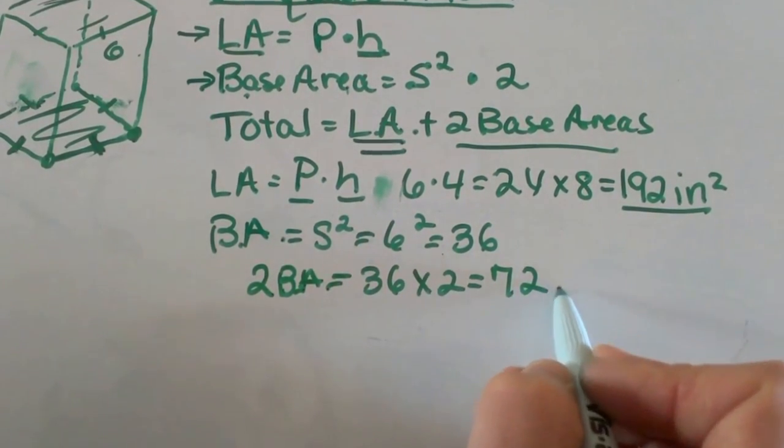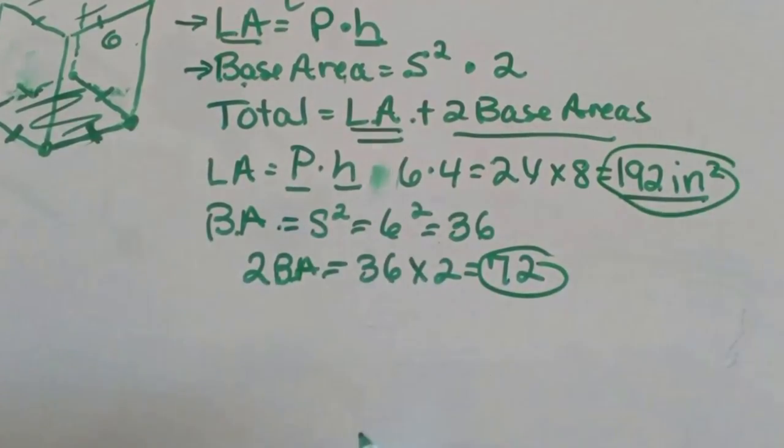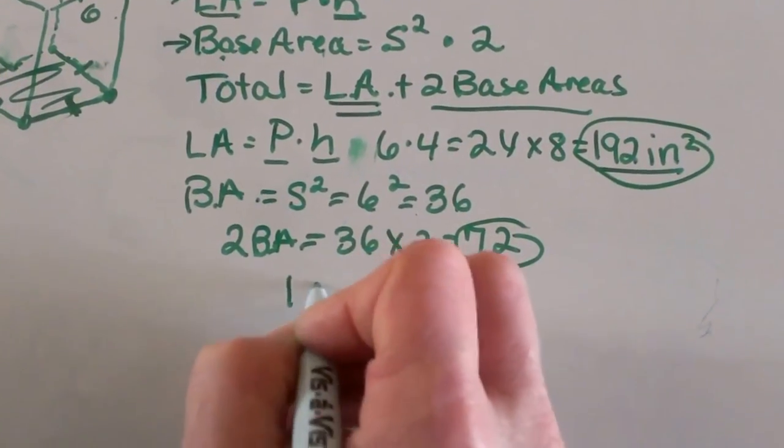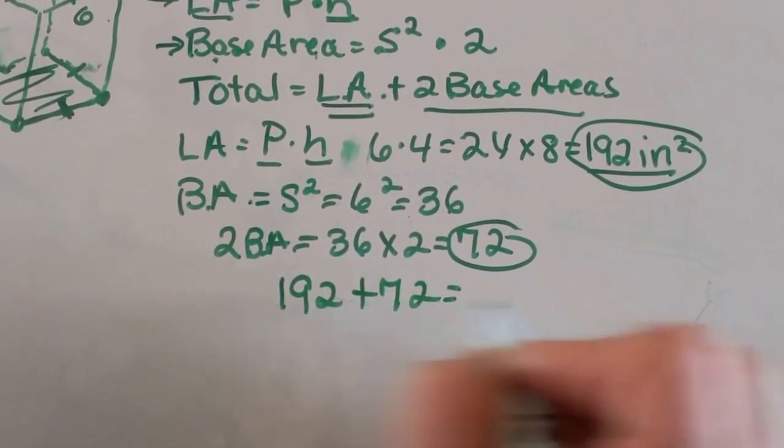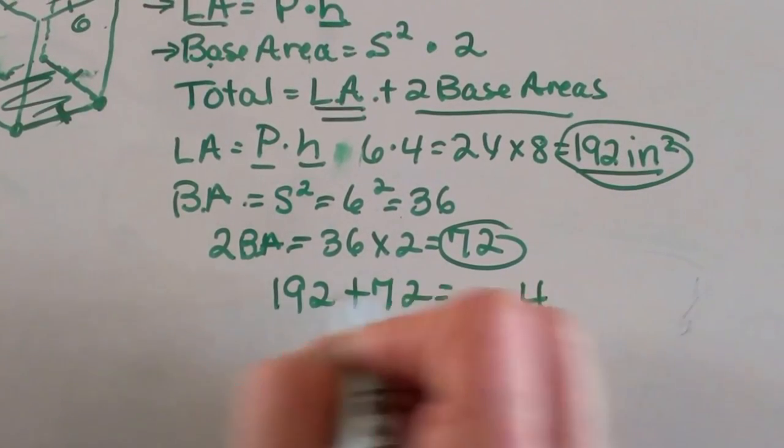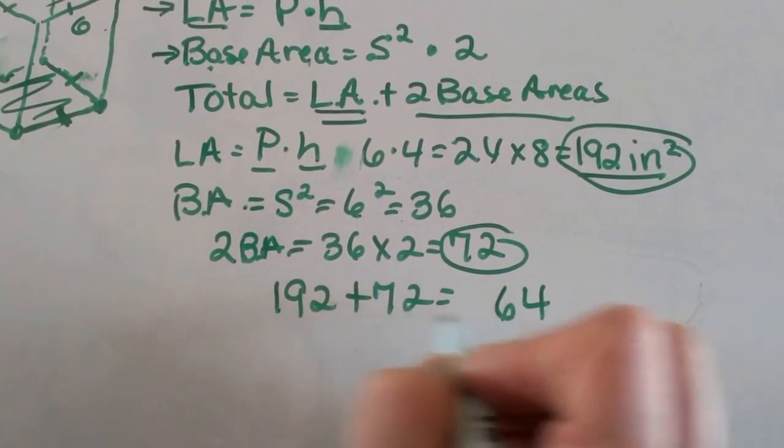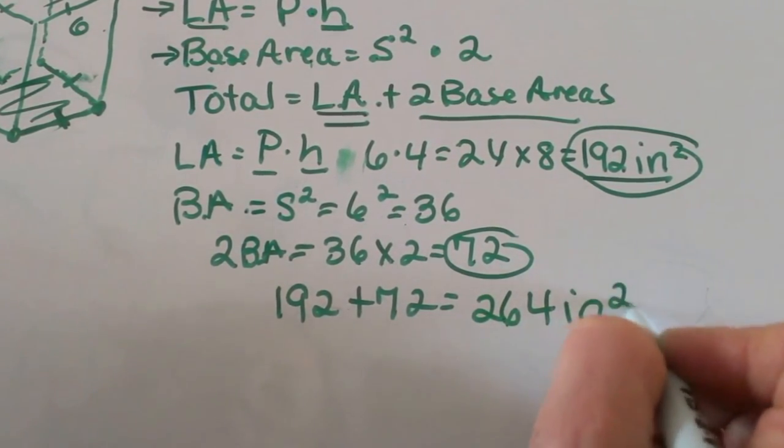Now we're going to take our base area of 72 and our lateral area of 192 and add them together. So 192 plus 72, we're going to add that up to 264 and that's in square inches.